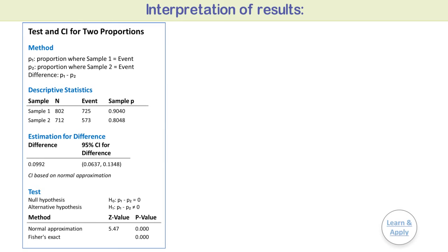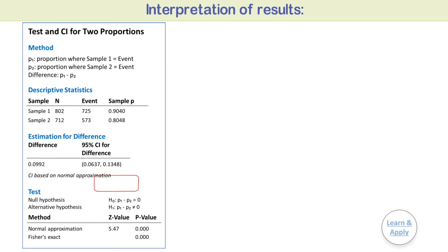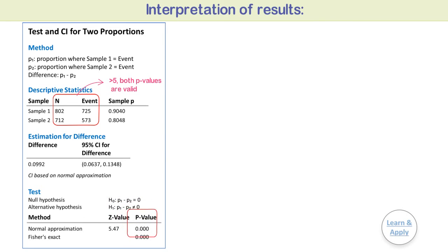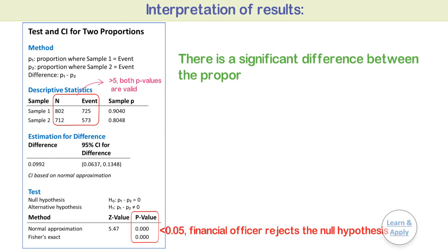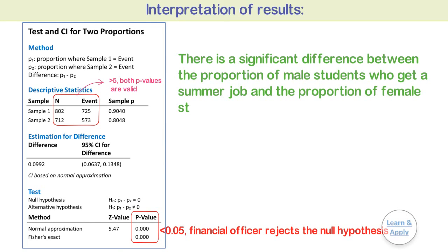Interpretation of results. In these results, the estimate of the population difference in proportions in summer employment for male and female students is 0.0992. You can be 95% confident that the population difference in proportions is between 0.0637 and 0.1348. The null hypothesis states that there is no difference in the proportion of male and female students who get a summer job. The number of events and non-events for both samples is at least 5, so both p-values are valid. Because the p-values for both methods are 0.000, which is less than the significance level of 0.05, the financial officer rejects the null hypothesis and concludes that there is a significant difference between the proportions of male and female students who get a summer job.